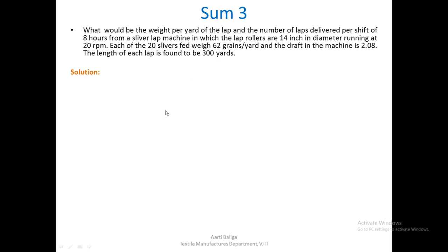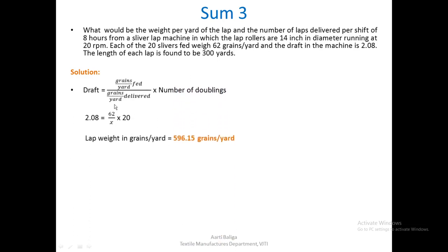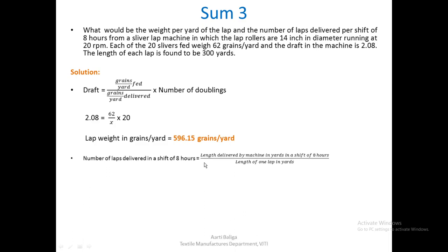We solve step by step. Using the draft formula with grains per yard fed = 62, number of doublings = 20, and draft = 2.08, we solve for the lap weight in grains per yard delivered and get 596.15 grains per yard.